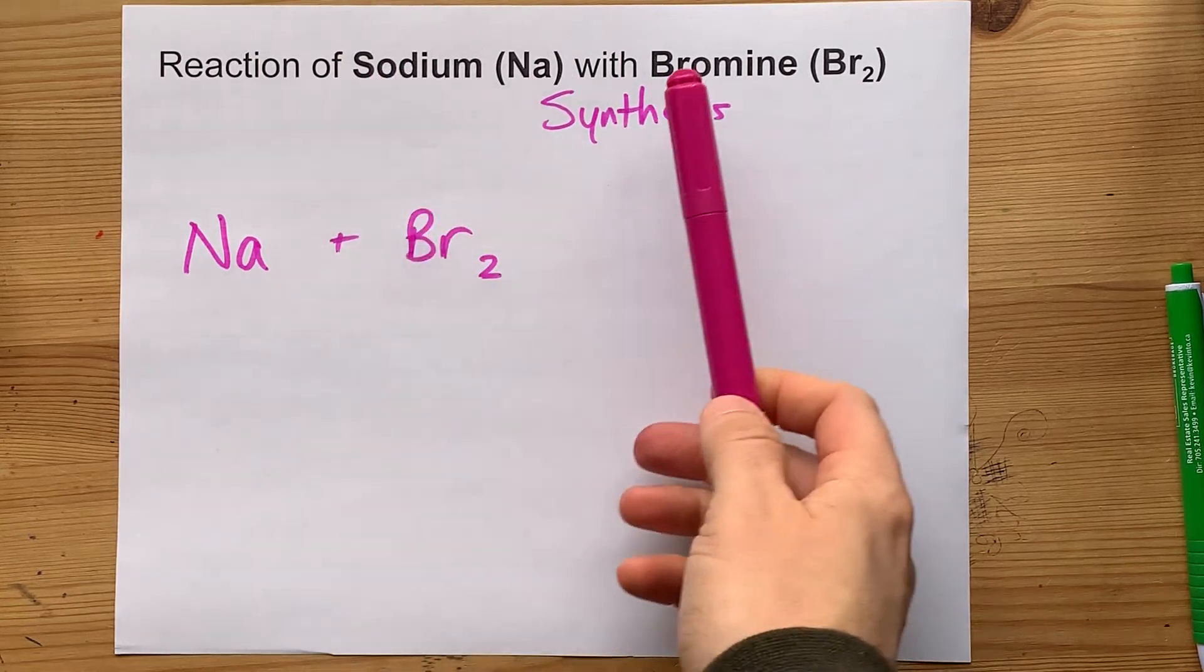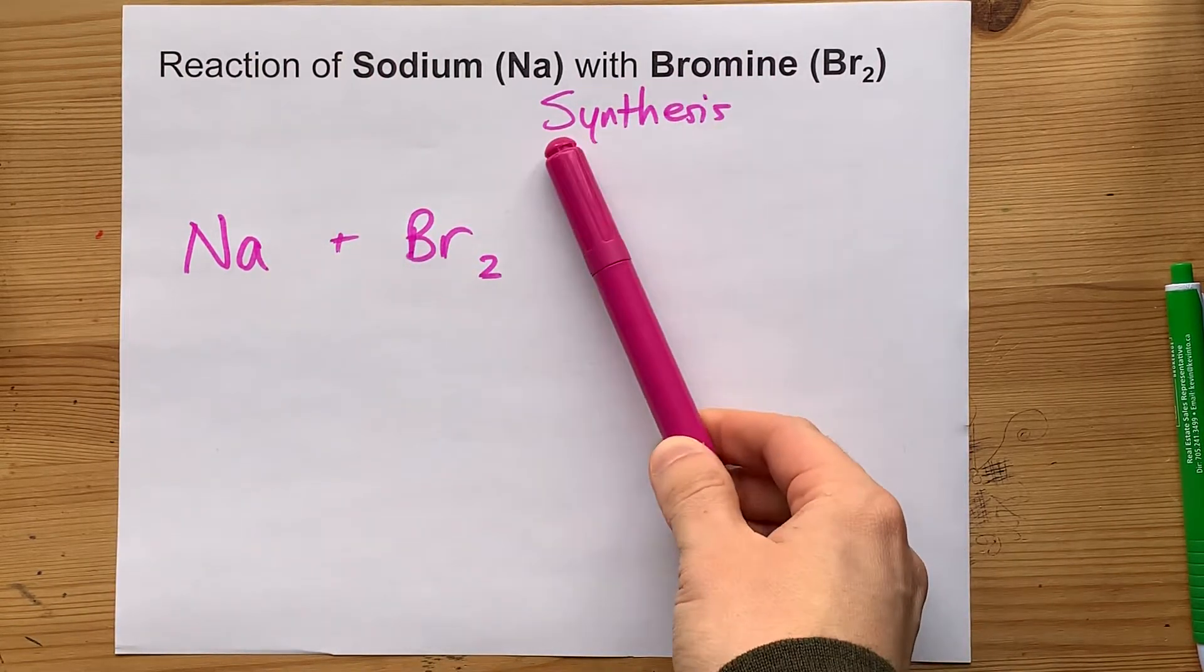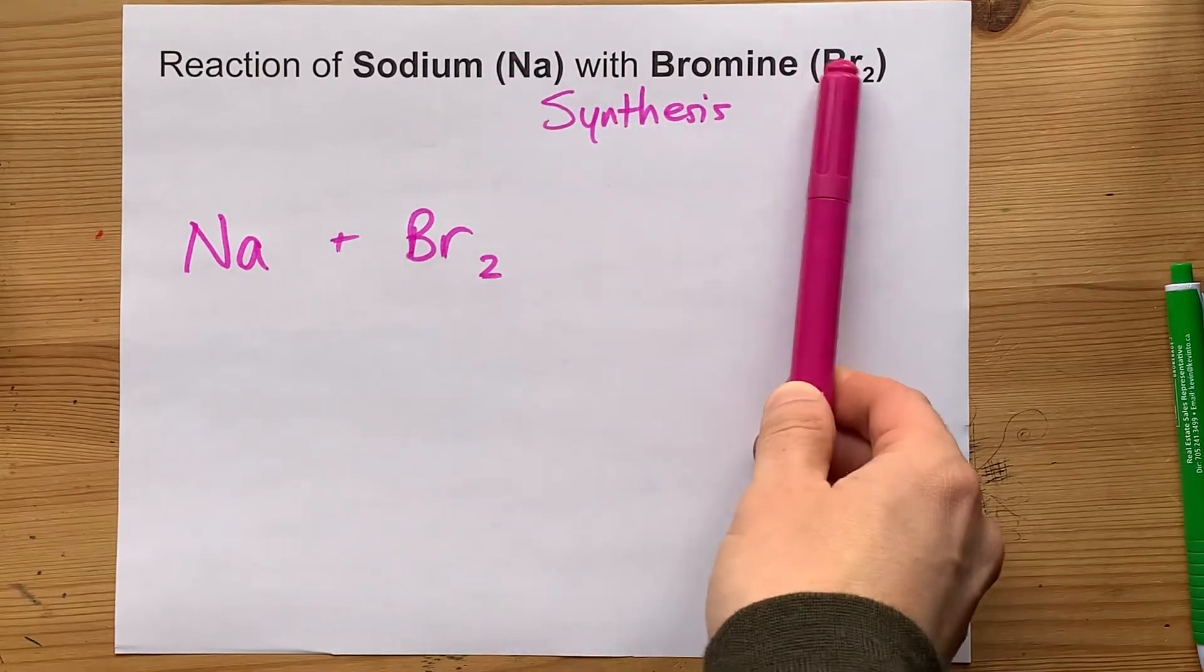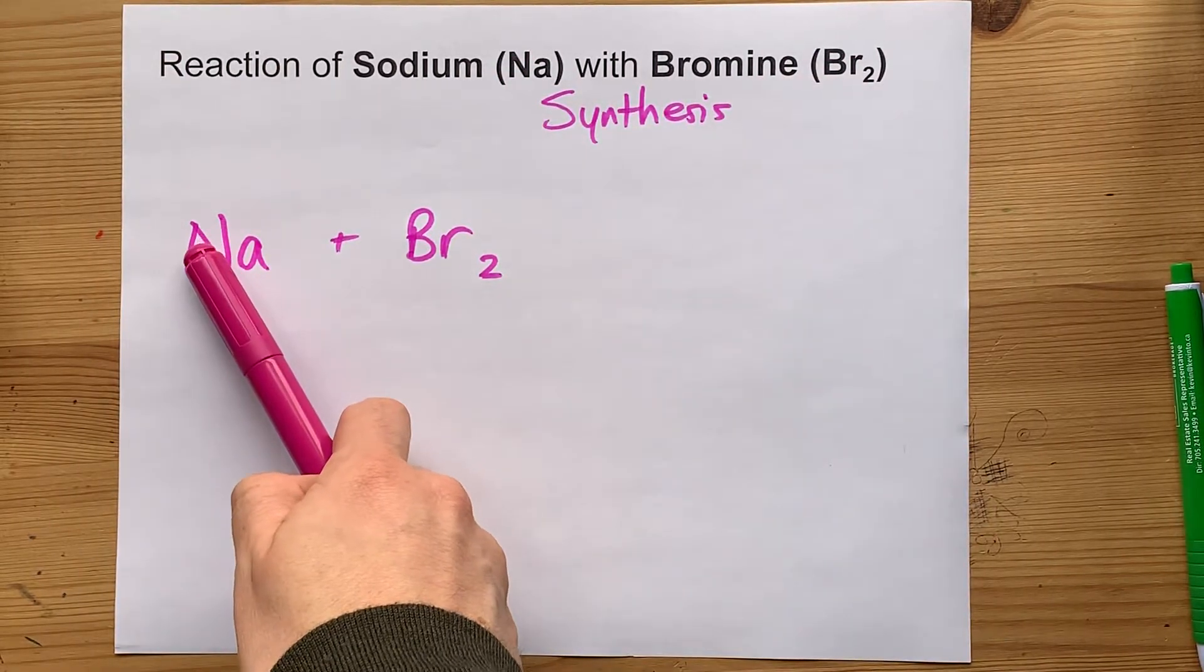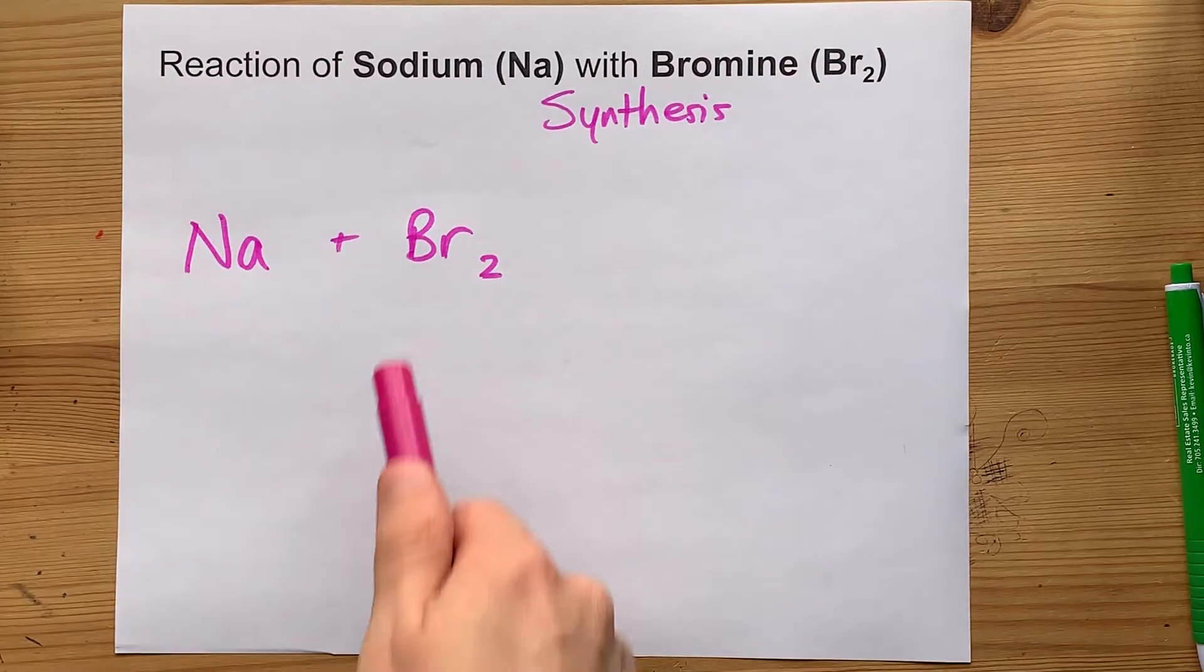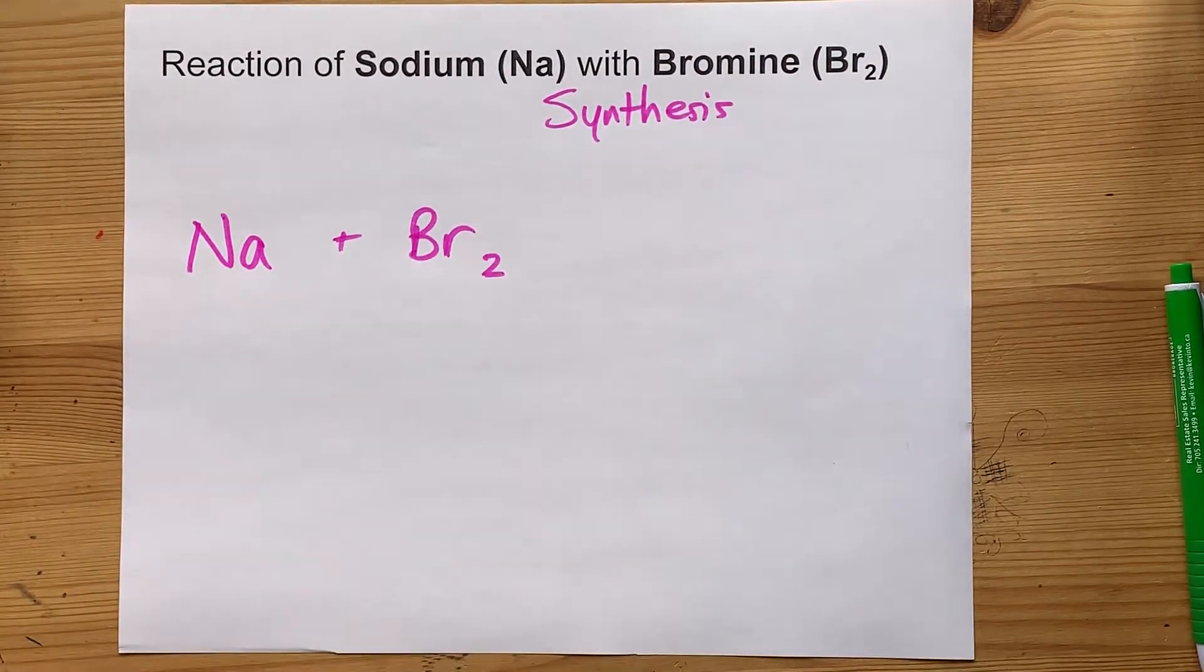The reaction of sodium with bromine is a straight-up synthesis reaction where the two combine into a single product. Sodium is a metal and likes to lose electrons. Bromine is a non-metal and likes to gain electrons.